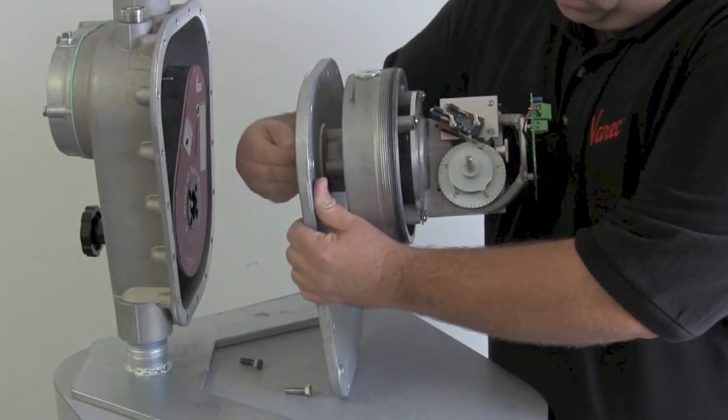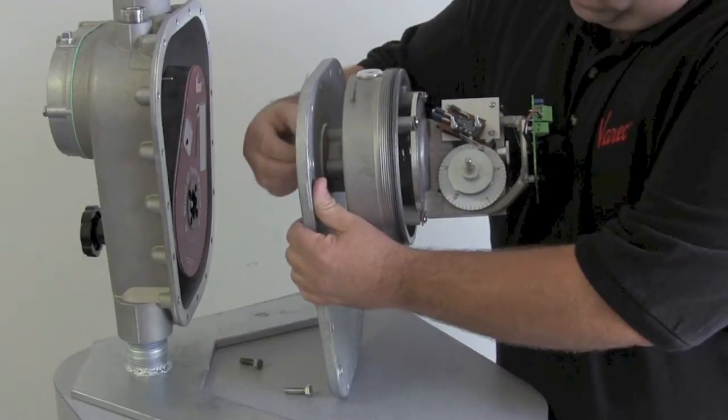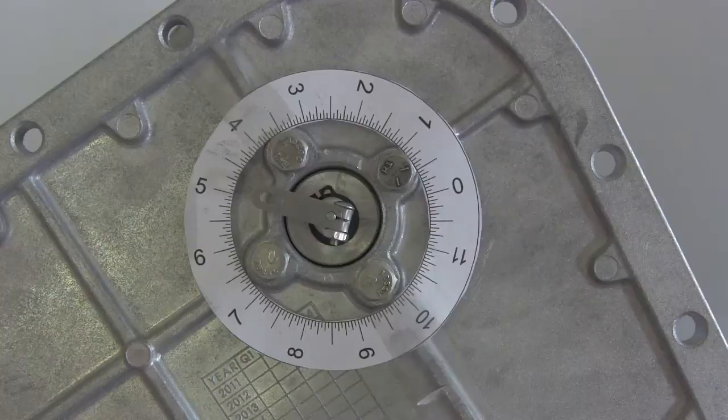Now turn the transmitter shaft so that the dial inside the transmitter matches the level reading on the gauge. At this point, the coupling should now align with the pin in the gauge head.